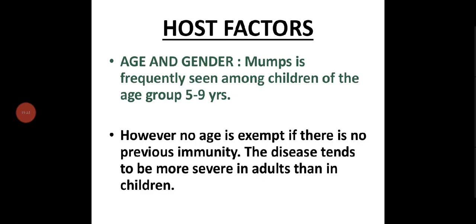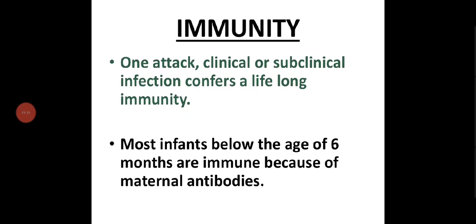Mumps is frequently seen among children of the age group of five to nine years. However, no age is exempt if there is no previous immunity, and it tends to be more severe in adults than in children. Most infants below the age of six months are immune because of maternal antibodies.